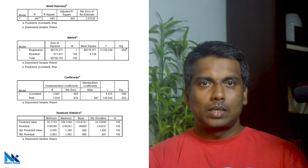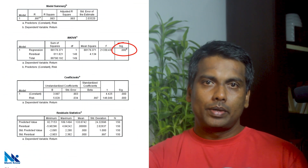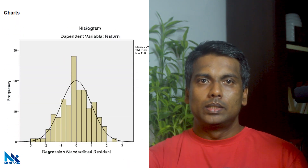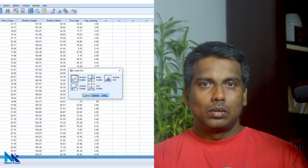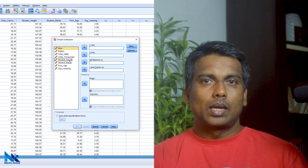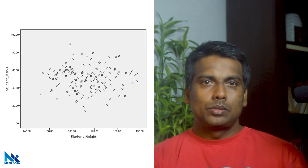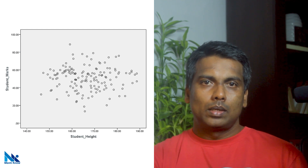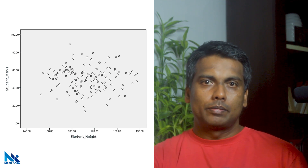For example, we can see that the model is significant, coefficients are significant, and the residuals are normally distributed. Now look at this scatterplot. In this case, we cannot see any sort of relationship between the two variables. In this type of situation, there is no strong justification to use regression analysis.